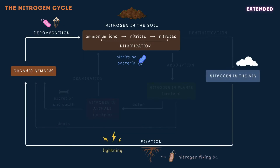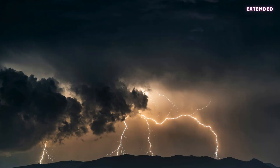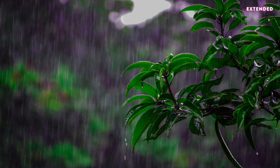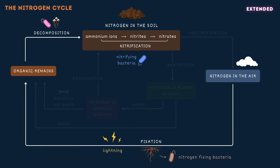At the same time, nitrogen fixation, which involves lightning or nitrogen-fixing bacteria, converts atmospheric nitrogen gas to nitrogen compounds in the soil. Lightning provides the energy to convert nitrogen gas into nitrogen compounds, which then dissolve in rain and enter the soil. Nitrogen-fixing bacteria live in the roots of certain plants like legumes and convert nitrogen in the soil air spaces into ammonium ions, which can then be acted upon by nitrifying bacteria.